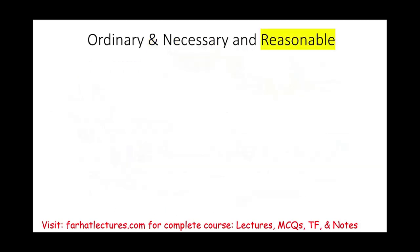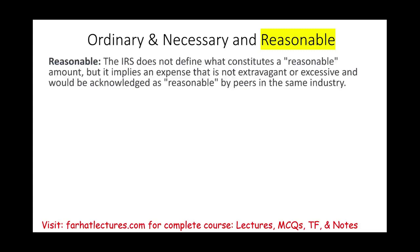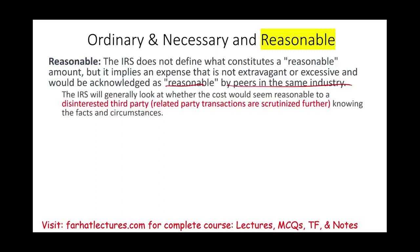The third condition is reasonable. The expense must be ordinary and necessary, and then reasonable. The word reasonable is not explicitly defined, but it's implied that the expense cannot be excessive — it cannot be too much — and it would be acknowledged as reasonable by peers in the same industry. If you run this number by someone in a similar business and they think it's reasonable, then it's reasonable. The IRS would generally look at whether the cost would seem reasonable to a disinterested third party.